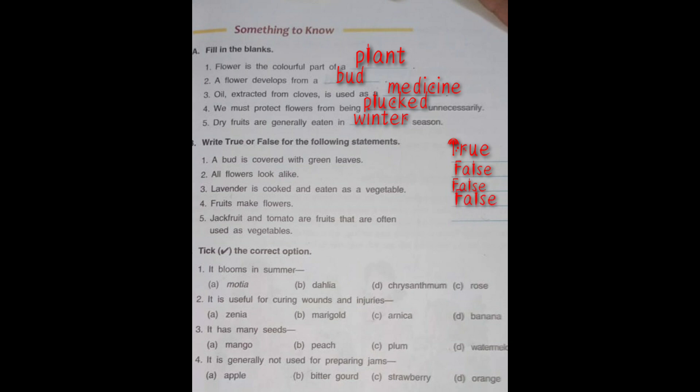Number five: Jackfruit and tomato are fruits that are often used as a vegetable. Yes, it is perfectly correct — they are eaten as vegetables. So, that is true.